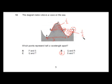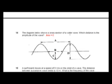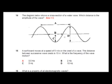Let's continue on. Question number 14: The diagram below shows a cross section of a water wave. Which distance is the amplitude of the wave? This one should be easy enough. Amplitude is always from the maximum displacement to the initial position, so option C is the amplitude.